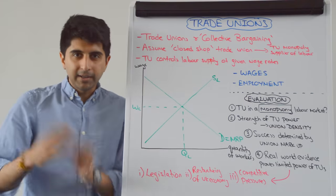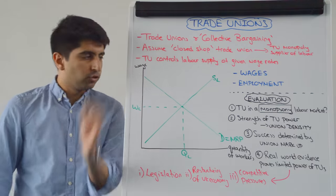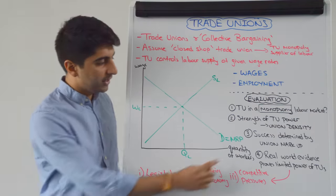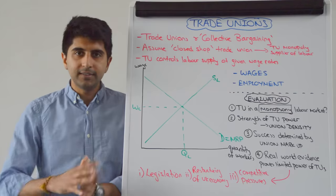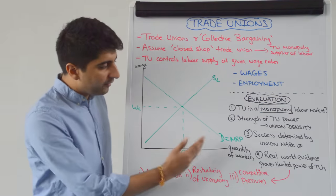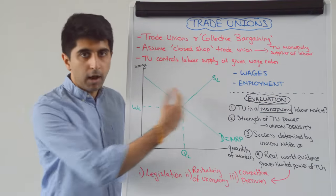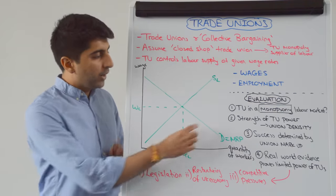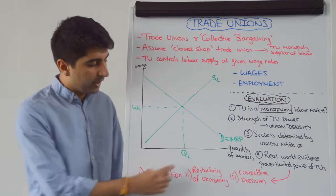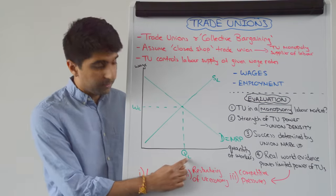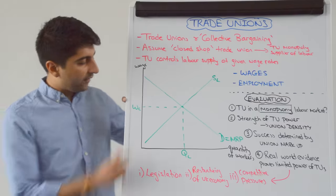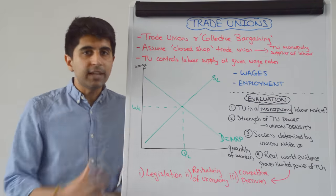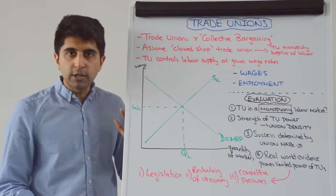Let's now move to the diagram and understand exactly what trade unions do. What I've drawn here is a competitive labour market. We have the wage on the y-axis, the quantity of workers on the x-axis. We have a demand for labour equal to MRP, and an upward sloping supply of labour. Where demand equals supply, that's where we get our equilibrium — the competitive quantity of workers and the competitive wage.